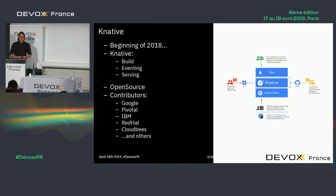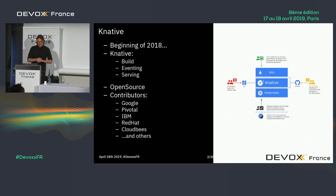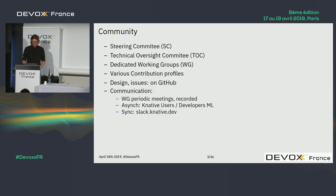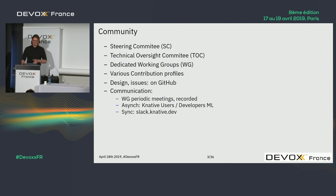A little bit of history: it was the beginning of last year, 2019, when we started hearing about Knative. It's an open source project made of three main components — build, eventing, and serving. There are a lot of contributors from companies and independents as well, including Google, Pivotal, IBM, Reddit, CloudBees, and other companies.